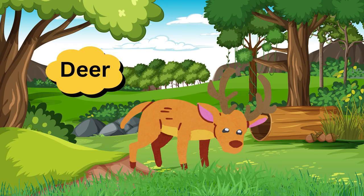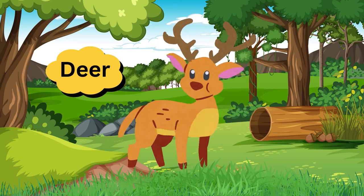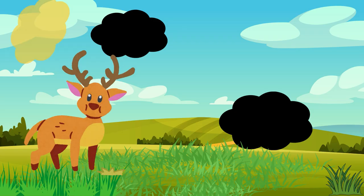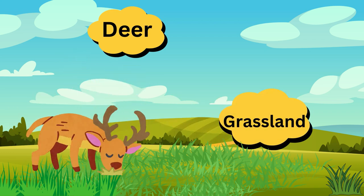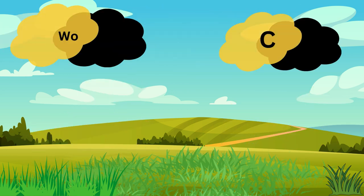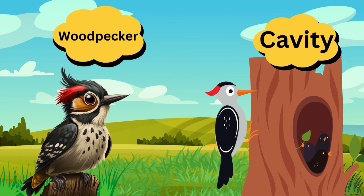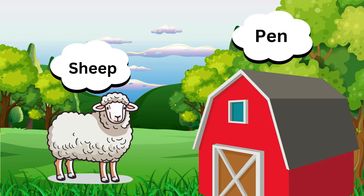Deer. A deer lives in a grassland. A deer lives in a grassland. Deer — grassland. Woodpecker. A woodpecker lives in a cavity. Woodpecker — cavity. Sheep. Sheep lives in a pen. Sheep lives in a pen. Sheep — pen.